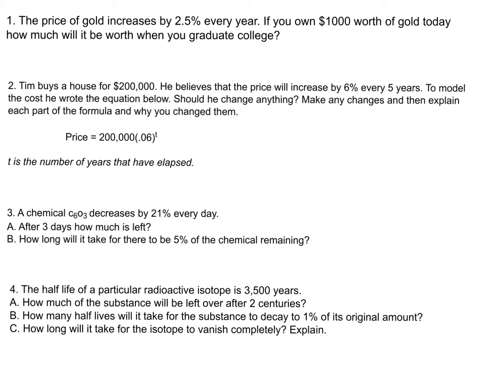The price of gold increases by 2.5% every year. If you own $1,000 worth of gold today, how much will it be worth when you graduate college? You're trying to figure out how much it's worth when you graduate. Let's say you're 18, so that would make it in four years. You currently have something worth $1,000. It increases by 2.5% every year, so you have 1.025 as your base — the 1 represents the current amount, and 0.025 is the 2.5%. The exponent tells you the number of time periods, so to the fourth power. Then you can go ahead and compute that.